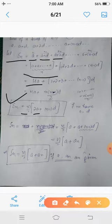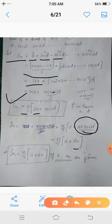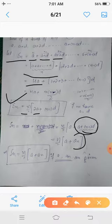Similarly, we can write 2a as a + a, and note that a + (n-1)d is the nth term a_n. This gives an alternative formula: S_n = n/2 * (a + a_n), where a_n is the last term. We can also write l for the last term, so in terms of a and l, the sum of the first n terms of this AP is S_n = n/2 * (a + l).